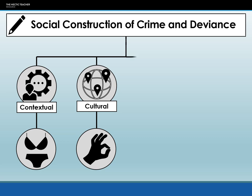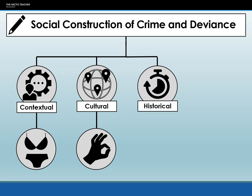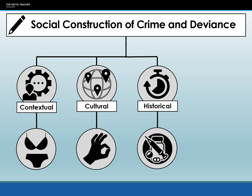Historical relativity refers to how criminal action and deviant behavior changes over time. What was once acceptable may become illegal or deviant, and what was once deviant or illegal may become acceptable. For example, in the Victorian era opium was not only legal but often given as a medicine without prescription. However, it is now a class A drug which carries a life prison sentence for dealing.